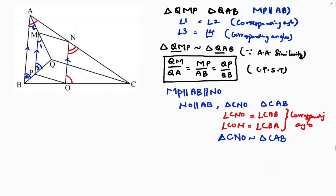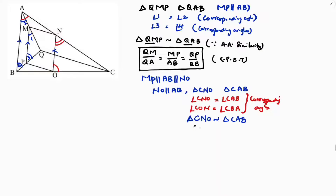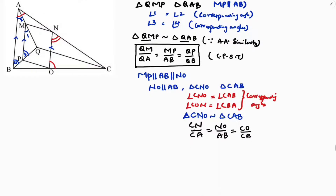Writing the side proportions: CN/CA = NO/AB = CO/CB. This is by CPCT — corresponding parts of similar triangles — since the two triangles are similar by angle-angle similarity.